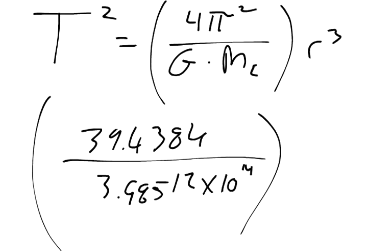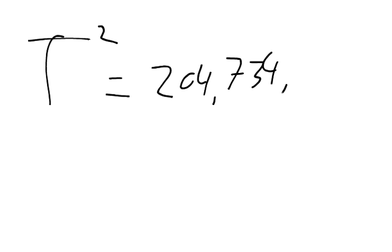And the radius was the radius of the Earth plus the height, which was actually 12,742,000 meters. And you got to cube that value. So plug that into your calculator, and you should get T squared equals 204,734,562.99, and that's in seconds squared.